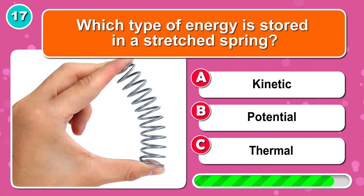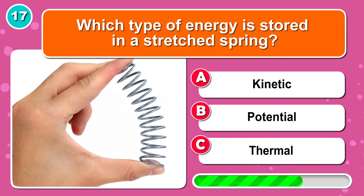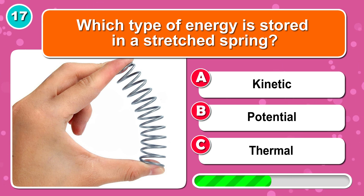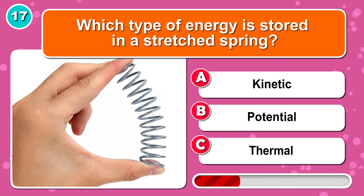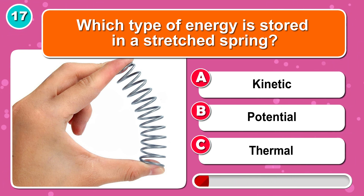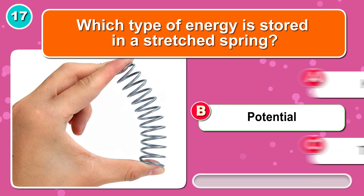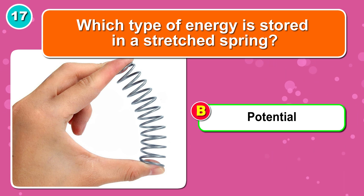Which type of energy is stored in a stretched spring? It's B: potential energy.